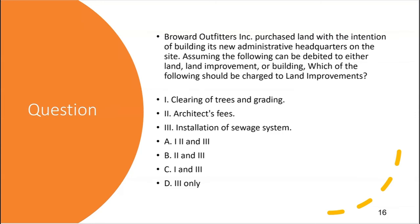We're always trying to anticipate the next question. If the next question said the sewage system was actually owned by the town, but Broward Outfitters was being charged a maintenance fee, then it would not be land improvements — it would be an expense, like a utility cost. Another scenario: if they get a one-time special assessment for a city-owned sewage system that all landowners have to pay, that would be a land cost. So: sewage system installed and owned by the company equals land improvements; ongoing charges for city-owned system equals expense; one-time special assessment equals land cost.